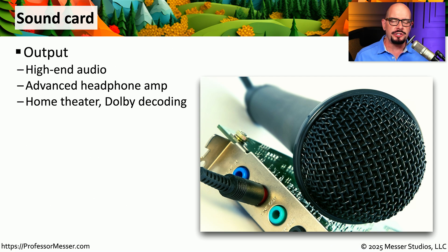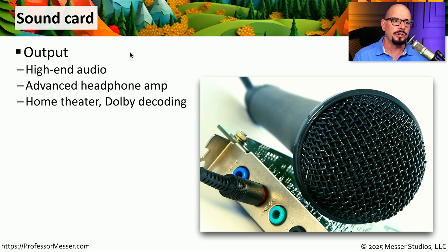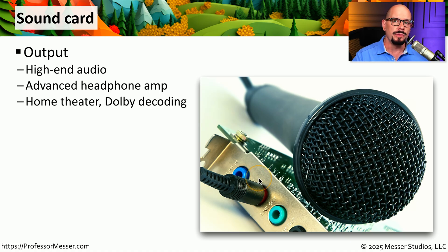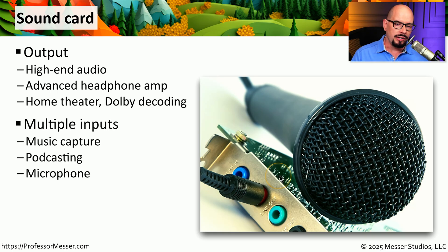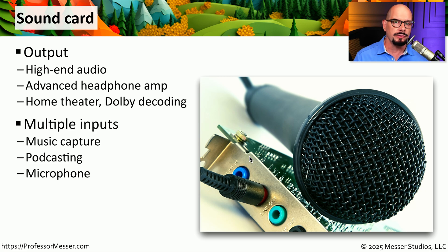A good example of an expansion card you might add to your system is one for audio. This is a sound card, and it can provide audio output that is far superior to what you might have on your motherboard. This might include specialized hardware to give you higher quality audio, or it may have additional output functions so you can plug in a home theater with multiple speakers and a subwoofer. These audio cards might also provide input, so you might want to plug in multiple audio sources from different devices, musical instruments, or multiple microphones.